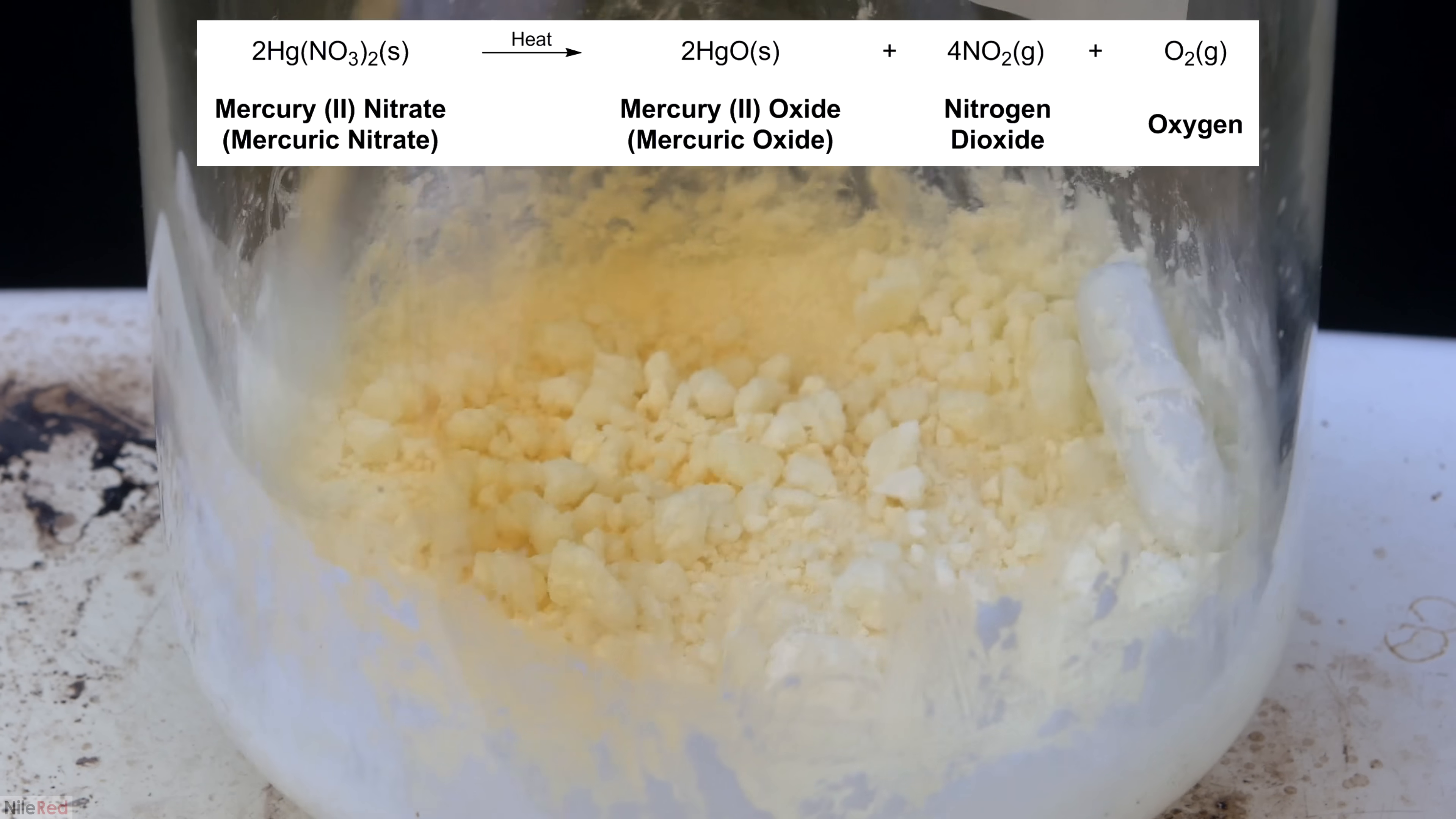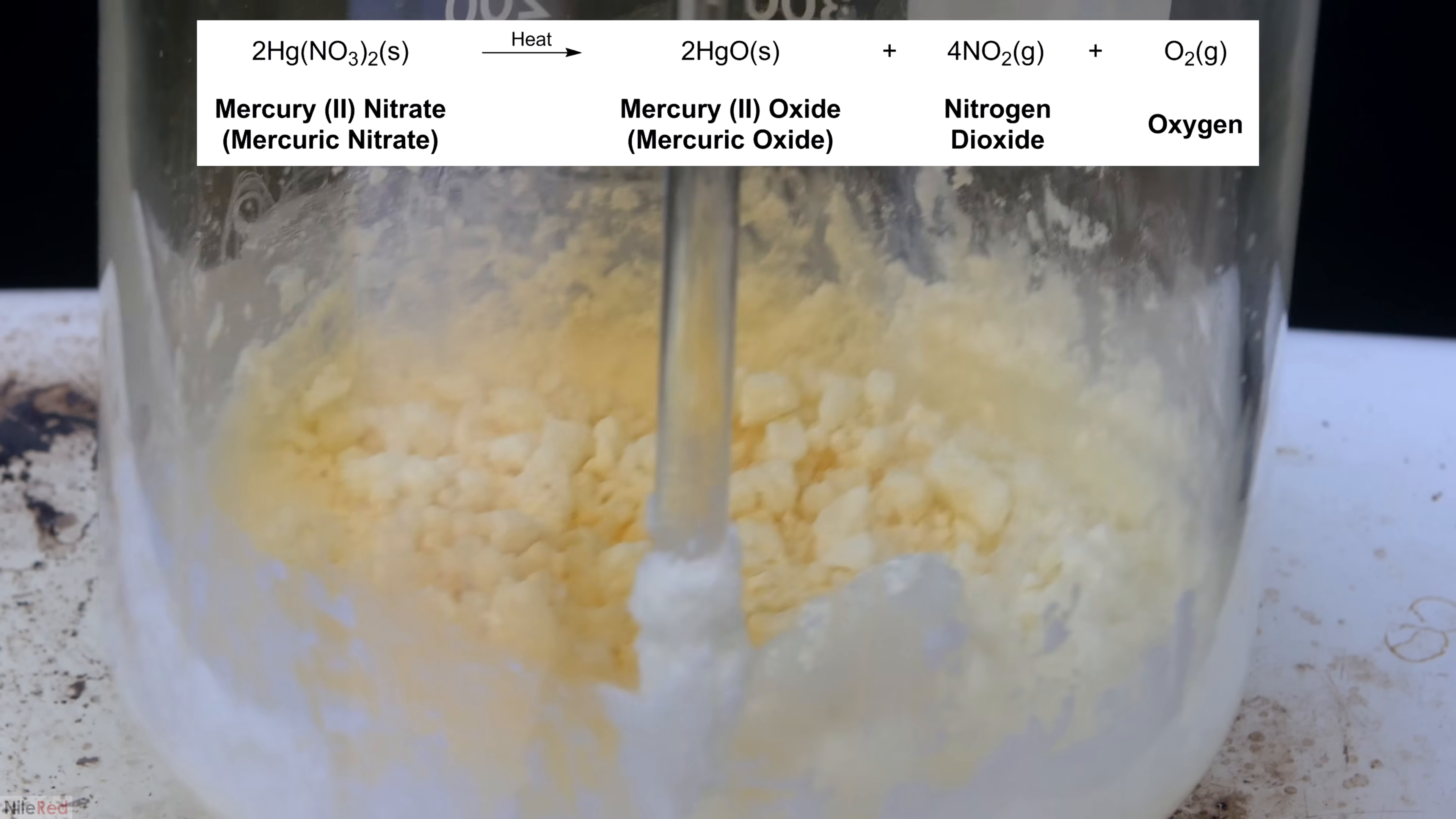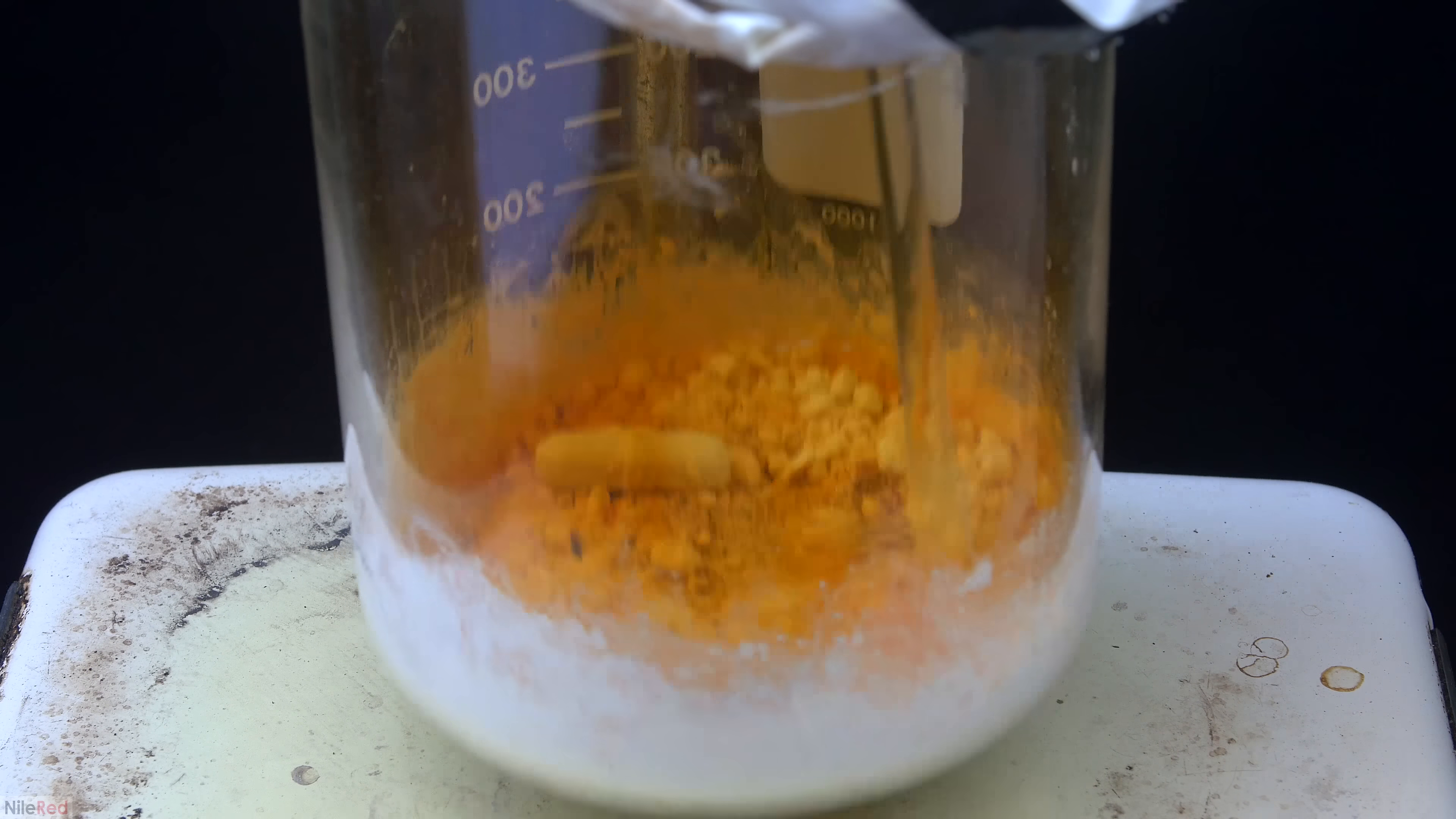So as I said before, we're decomposing our mercury(II) nitrate into mercury(II) oxide, but we also form a little bit of oxygen gas, as well as nitrogen dioxide. As the mercury(II) nitrate continues to decompose, we start to see some red mercury(II) oxide forming.